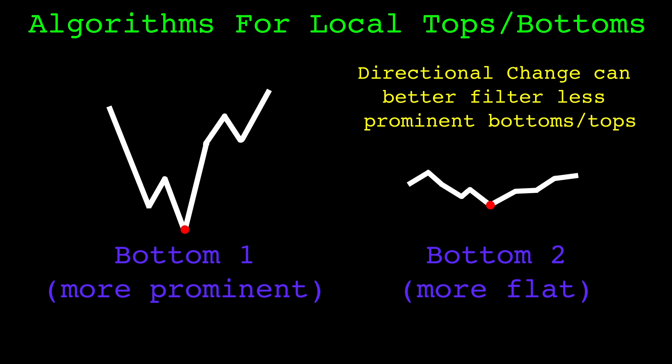The directional change method focuses on price. If the retracement threshold was high enough, it could ignore the less extreme bottom shown on the right.